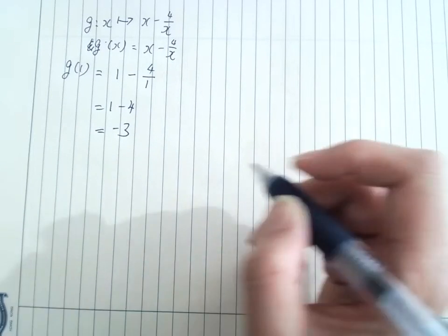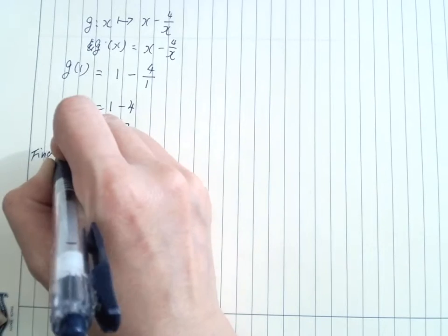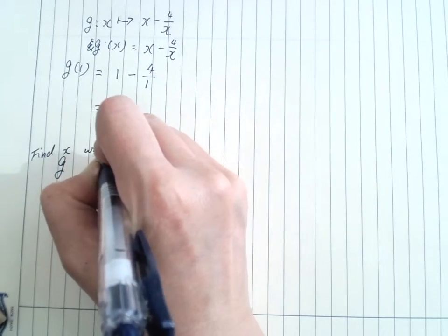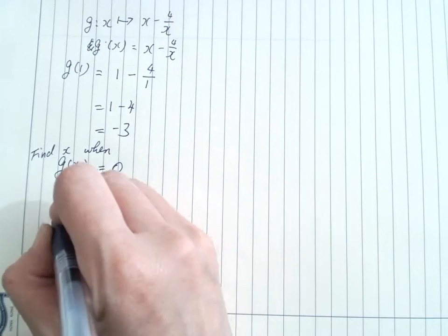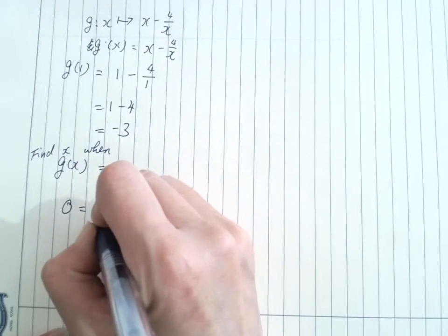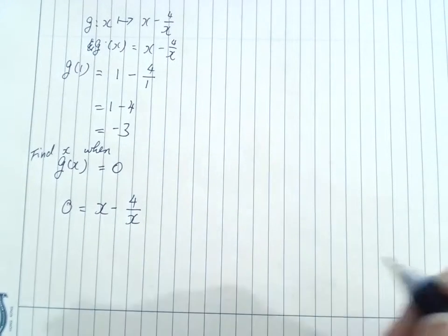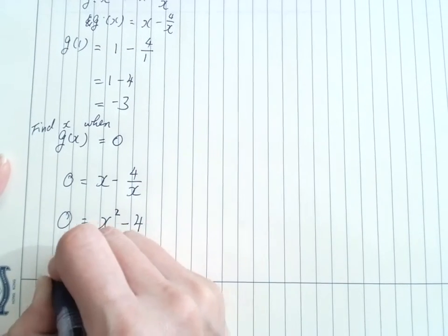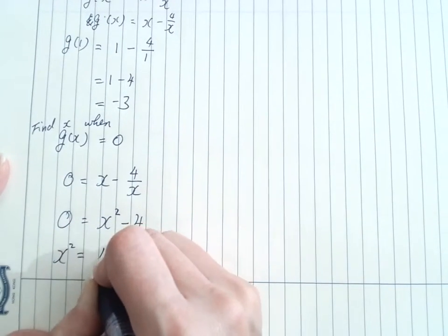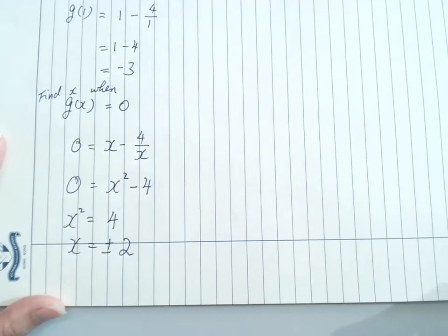Sometimes they will ask something like that. If that's the case, I'll have the equation like this. Now I need to solve for x. When x equals 2, g(x) will be equal to 0. Nice and easy.